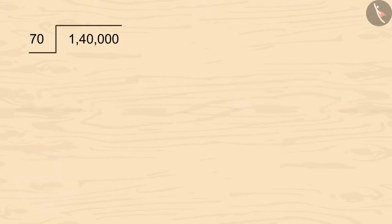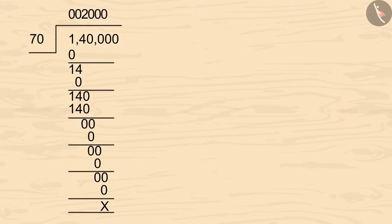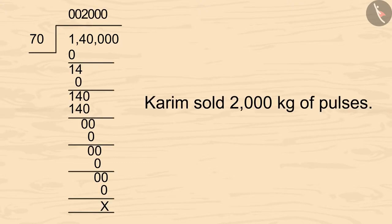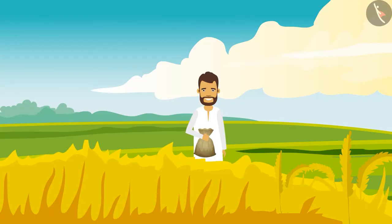On dividing 1 lakh 40,000 by 70, we get 2,000. So Karim had sold 2,000 kilograms of pulses in these 3 months. Now let's see how much profit Karim has gained.